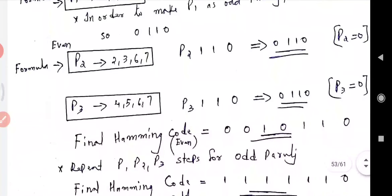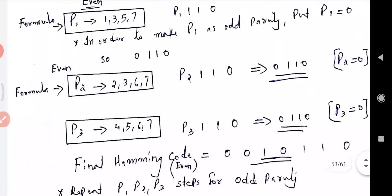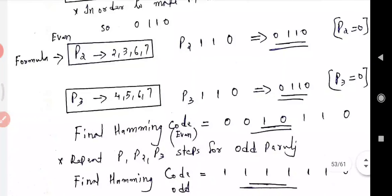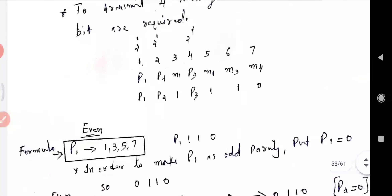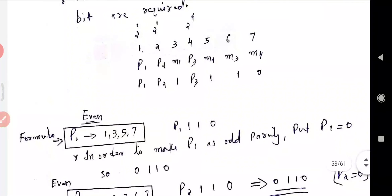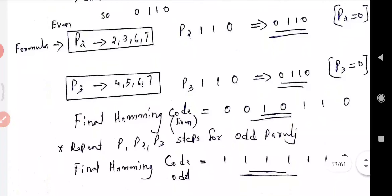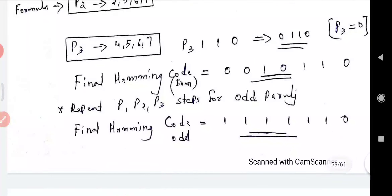So the Hamming code for the even parity case is P1 equal to 0, P2 equal to 0, P4 equal to 0. Writing down from the equation in order P1, P2, M1, P4, M2, M3, M4, we get the complete Hamming code. For odd parity, the same steps apply from the same equations. That is all about the Hamming code.